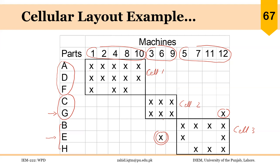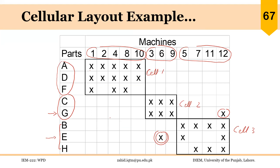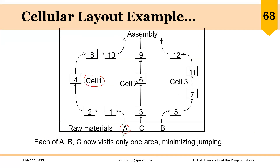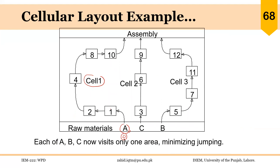Cell one comprises machines one, two, four, eight, and ten. Cell two comprises machines three, six, and nine. Cell three comprises machines five, seven, eleven, and twelve. The sequence of operations for part A is as shown. Part D also has the same flow. However, part F does not require machine two and machine ten — it only requires machines one, four, and eight.